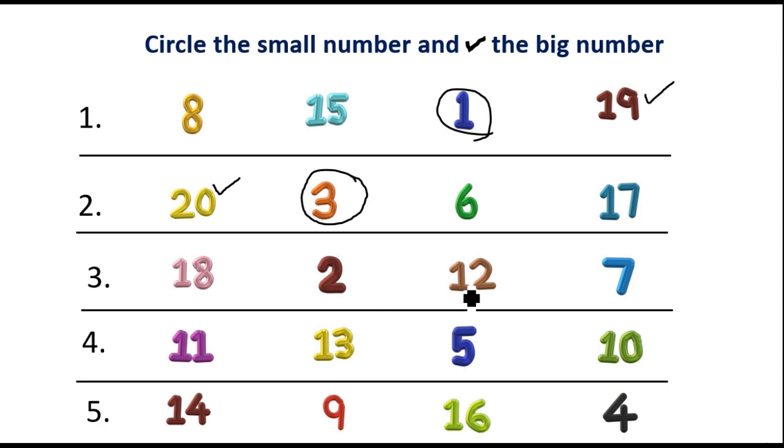Third one: 18, 2, 12, 7. Which is small? Yes, 2 is small. Circle 2. Which is big? Yes, 18 is big. So tick 18.